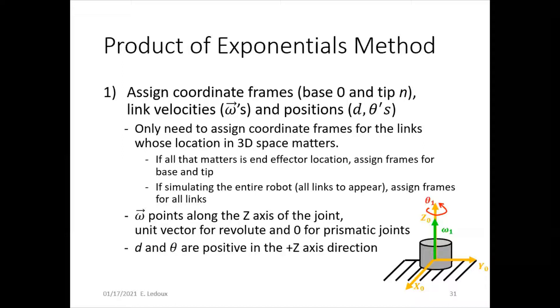Omega points along the z-axis of the joint, so it is basically just the same as the z-axis vector for revolute joints. For prismatic joints, omega is just zero because there is no rotation. D and theta are of course always positive in the z-axis direction.